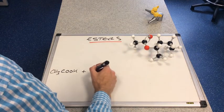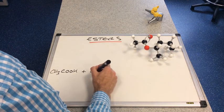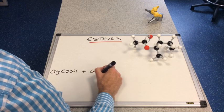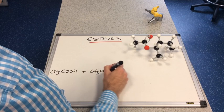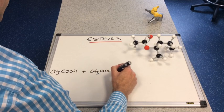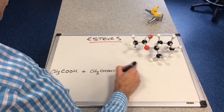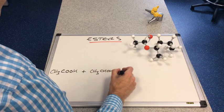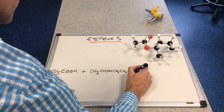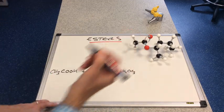The structural formula of pentan-2-ol is CH₃-CHOH-CH₂-CH₂-CH₃.